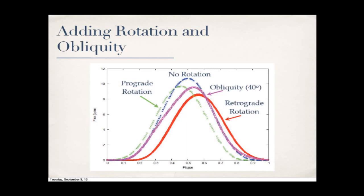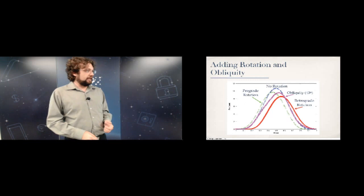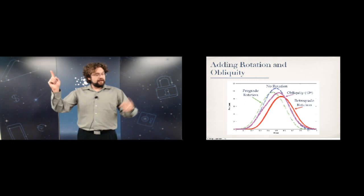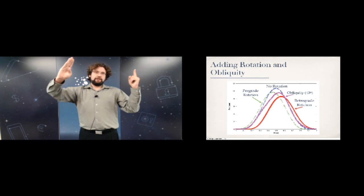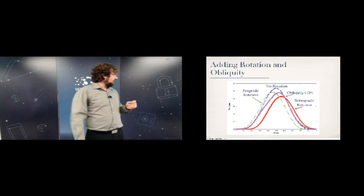Anyone dealing with short-orbital-period planets will object because of tidal locking — these planets are expected to have their spin period matched to their orbital period. I don't necessarily believe this model, but I can match the observations with it. Alternatively, I can add obliquity: tilting the planet's spin axis relative to the star's, which also produces an asymmetry in the curve that can match the observations.